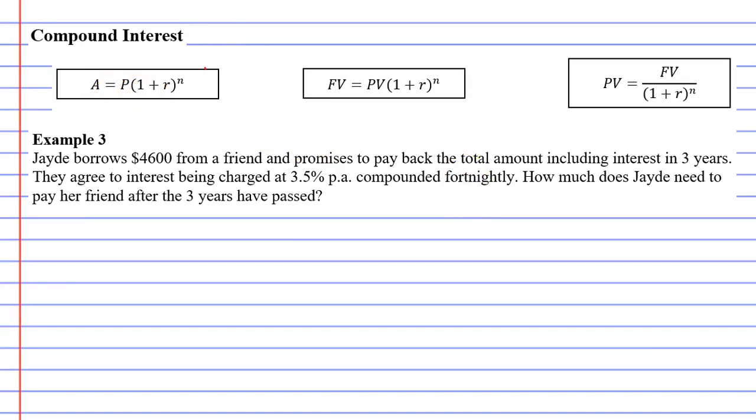I'll underline that. This will be different because we're doing it fortnightly. It then says, how much does Jade need to pay her friend after the three years have passed? Let's start with the present value, which is $4,600. We're going to be using our compound interest formula.